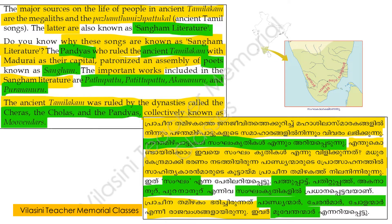The major sources on the life of people in ancient Tamilakam are the Megaliths and the Palanthamil Paattukal — ancient Tamil songs. The latter are also known as Sangham Literature. From the Megaliths and from the Palanthamil Paattukal, we get information about the life of the people of ancient Tamilakam. These ancient Tamil songs are also called Sangham Krithikal.